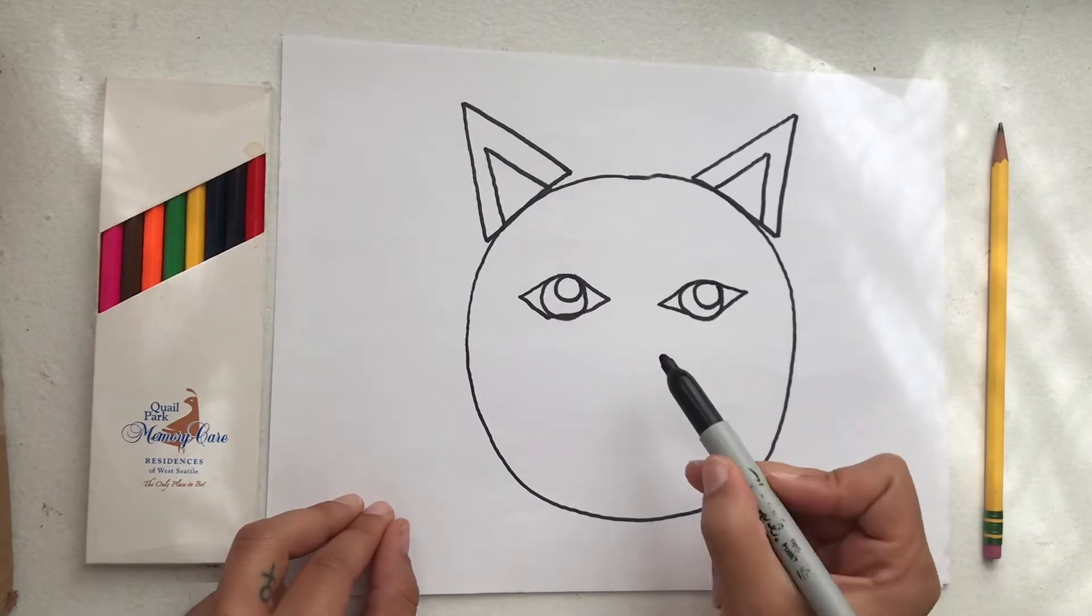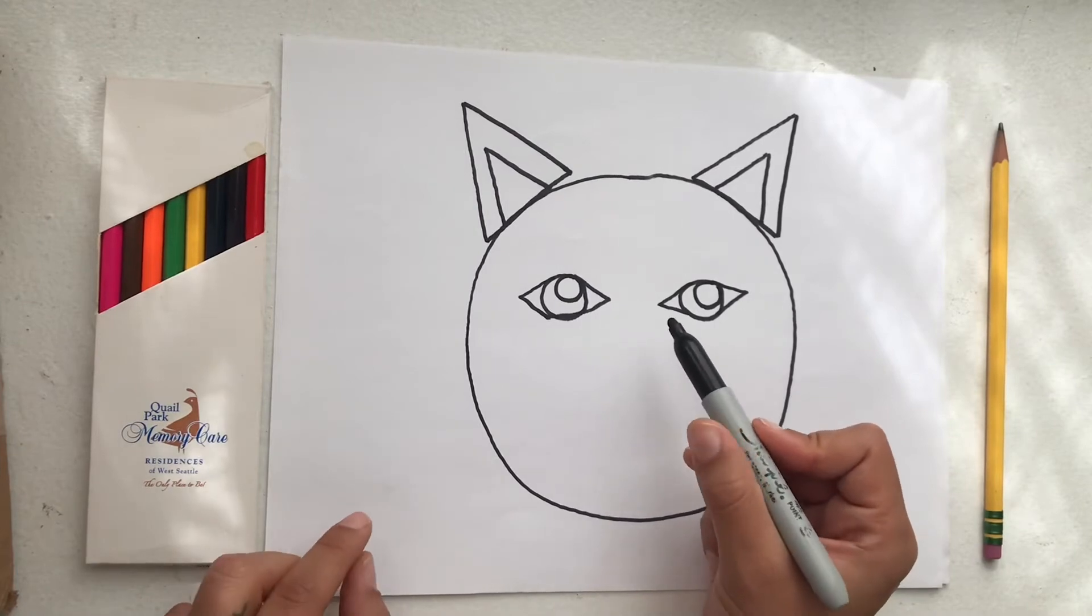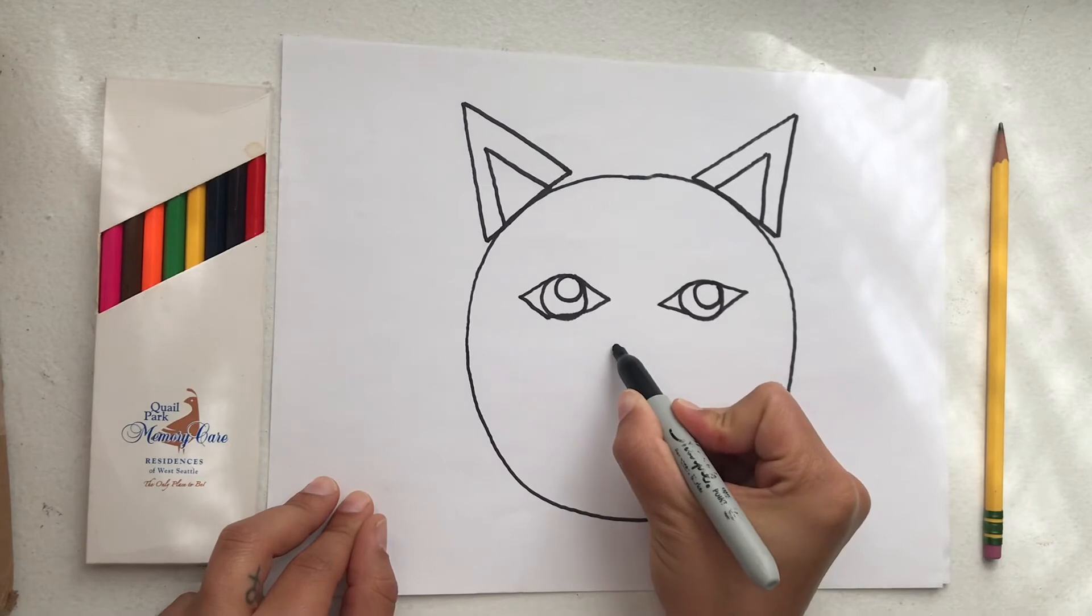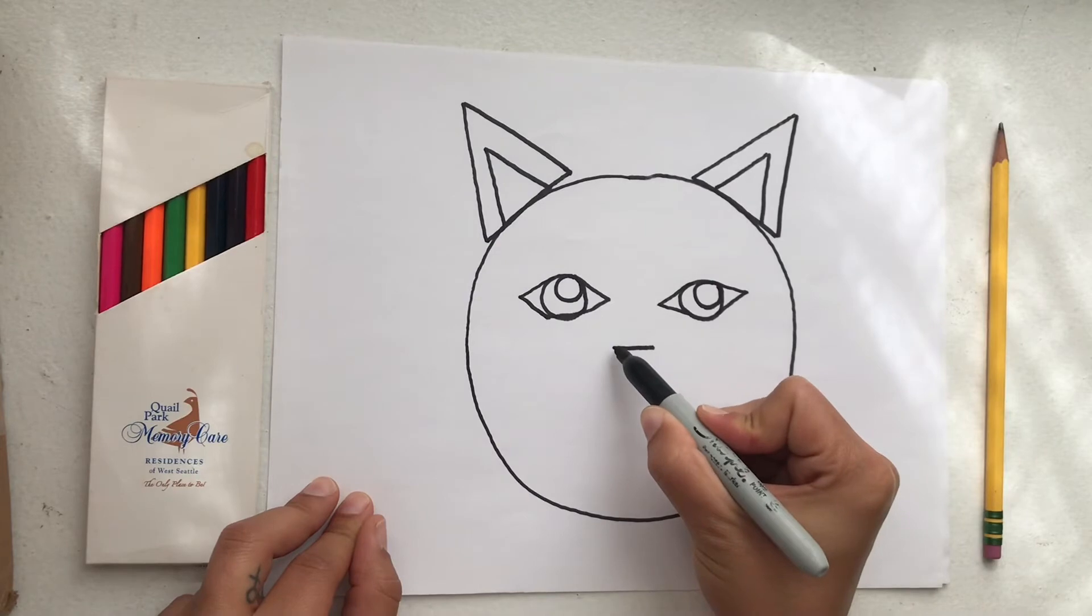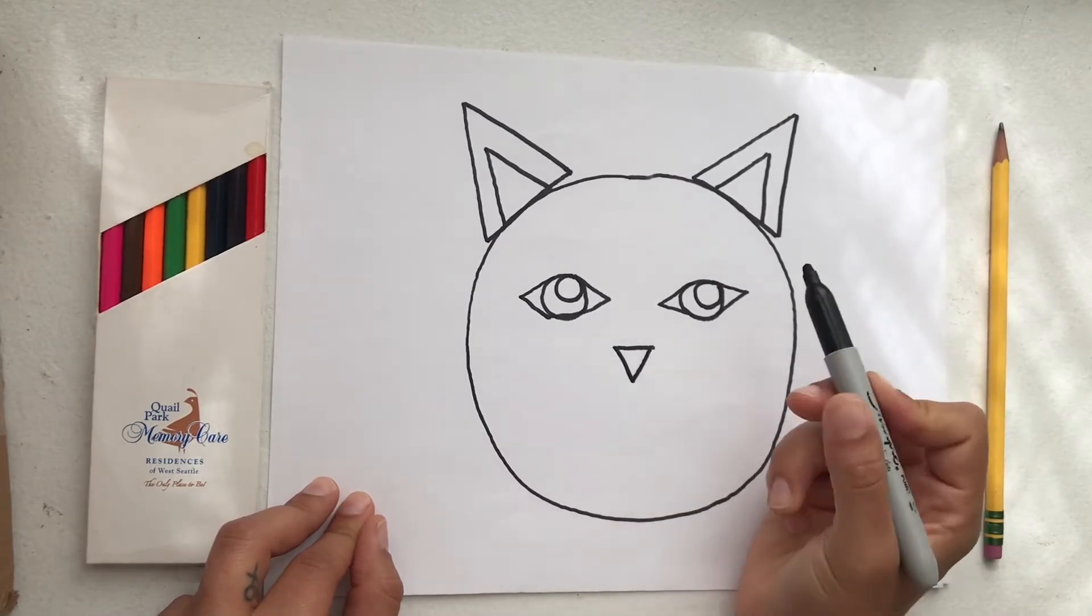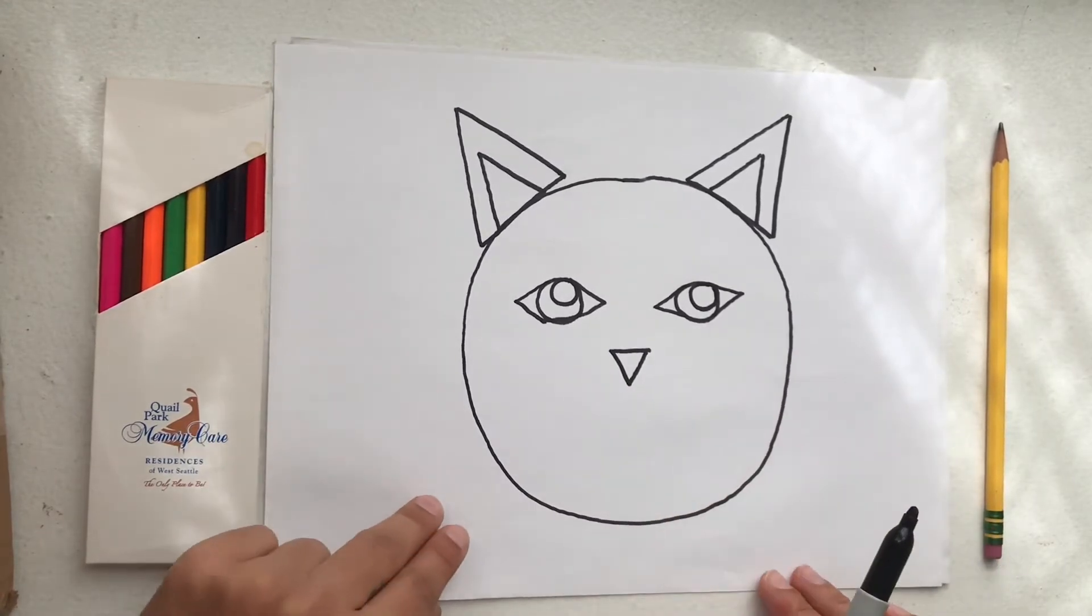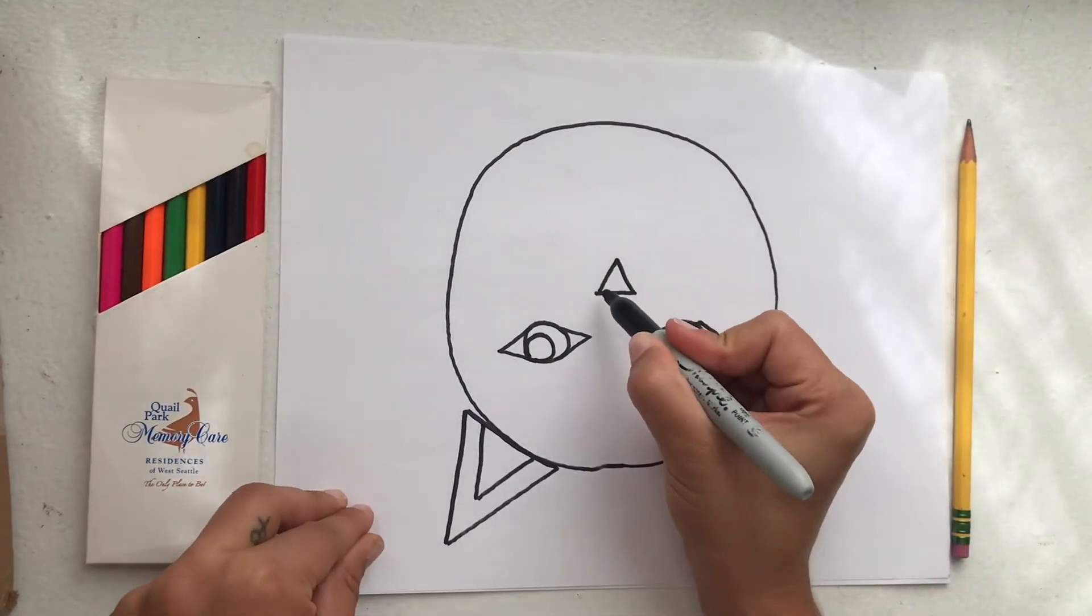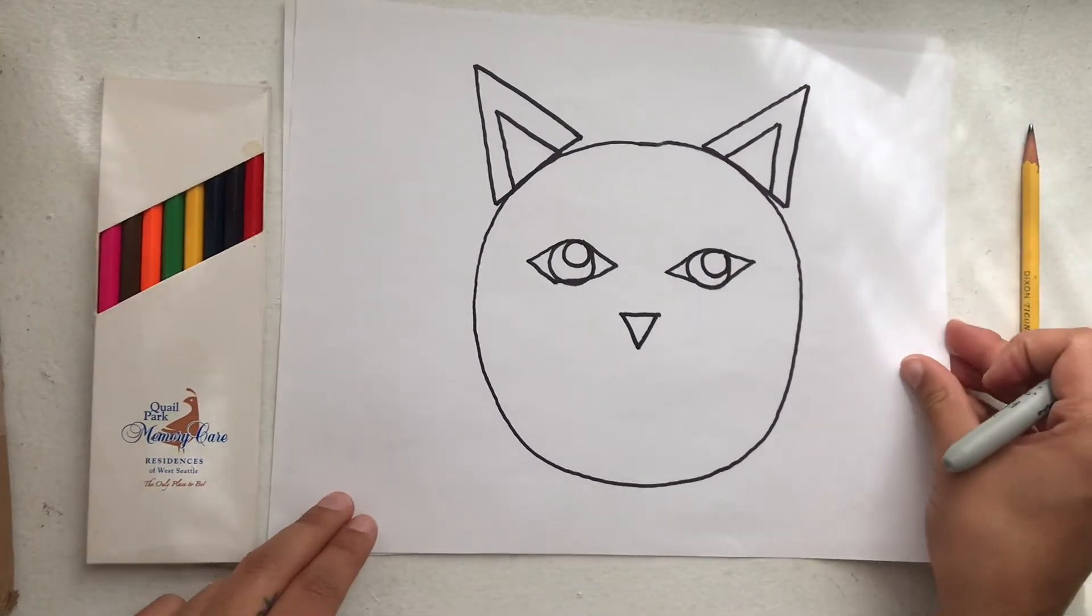The next step is our nose. Kitties have an upside down triangle shape for their nose. So I'm going to start with a straight line just like that and then I am going to do down the slope, up the slope, just like an upside down triangle. If it helps you can turn your paper upside down and draw a right side up triangle and then flip it back around and it will be a kitty's nose.